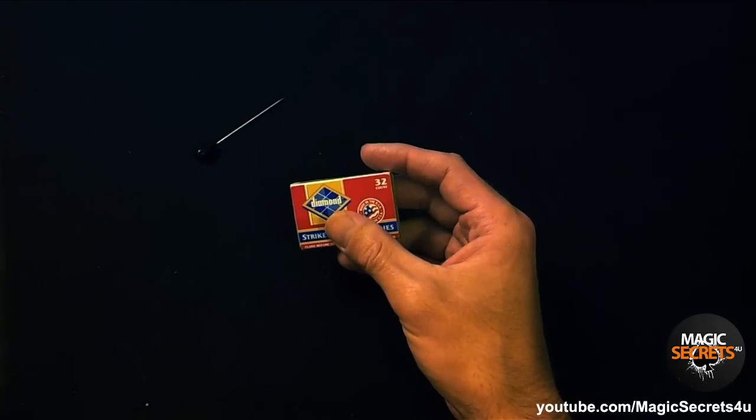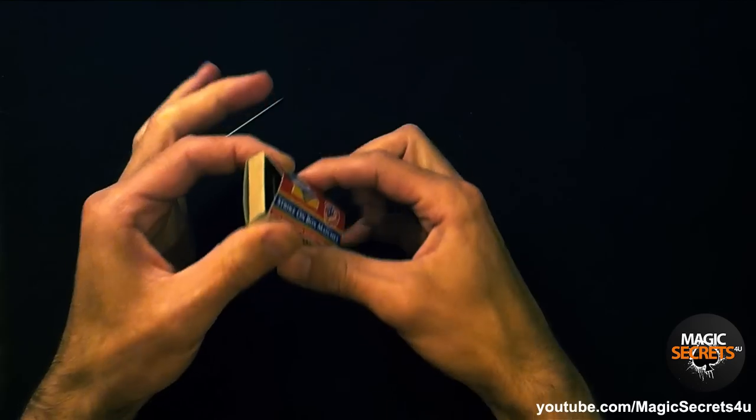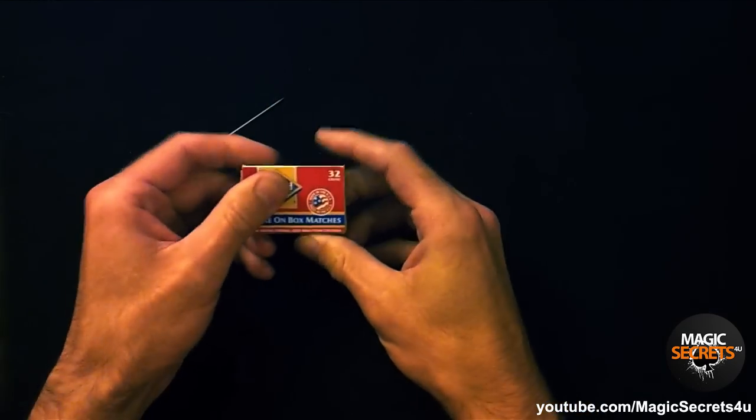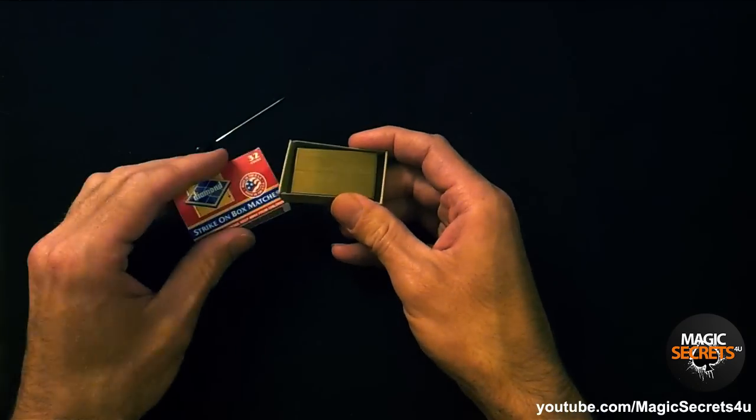And so once they're crying, what you need to do is go squeezy squeezy like this - squeezy on the sides of the box. And what that does is it closes the piece of metal inside. Then you just open the box.